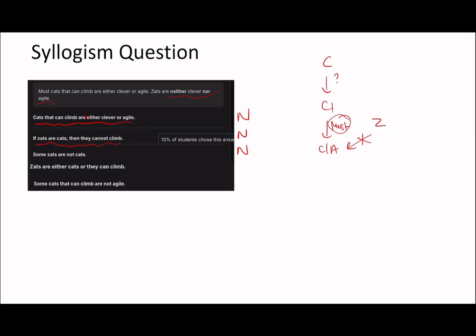Zats are either cats or they can climb. What did we say just before? We said zats can be cats and they could climb as well. If you've been following my videos, you'll know I love seeing the word 'or' because it's easy to solve — if it says 'or', it means it can only be one or the other. So if it can be both, the statement is immediately wrong. A zat could neither be a cat nor be able to climb, so the statement's wrong. And it's doubly wrong because a zat could be a cat and be able to climb. So that's another no.